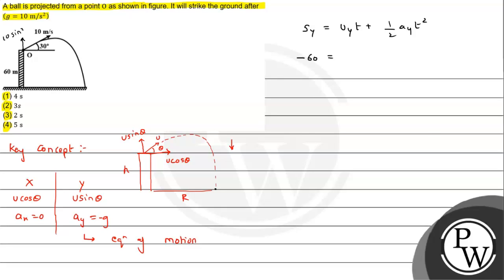Sin theta is 1/2, so it will be 5t. Then (1/2) times g value: a_y will be minus g, so it will be minus 10t². So we have -60 = 5t - 5t².